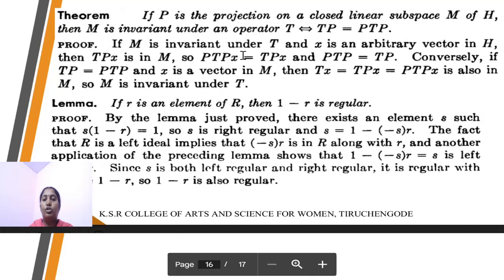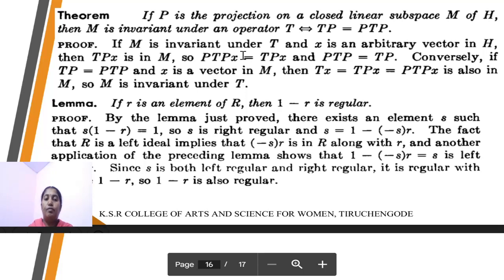Next theorem: if P is a projection on a closed linear subspace M of H, then M is invariant under an operator T, which implies TP = PTP. Proof: M is invariant under T and h is an arbitrary vector in H. Then T(Ph) is in M, so P(TPh) = TPh and PTP = TP. Conversely, if TP = PTP and h is a vector in M, then Th = T(Ph) = PTPh is also in M. So M is invariant under T.